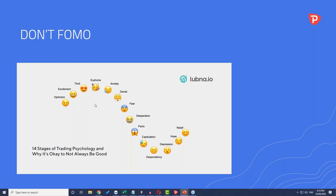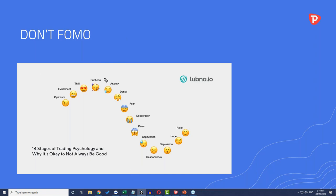As scalpers, we do not want to FOMO. If you ever feel euphoric or despondent, you must stop trading — these are two of the fourteen stages of trading psychology where you're most likely to make incredible mistakes. You can go from euphoric to despondent very quickly.